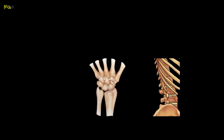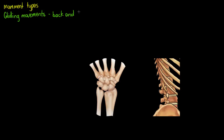Welcome to this tutorial where we are talking about the last type of movement that we haven't really focused on too much as yet, and that's gliding movements. Gliding movements are a type of movement that includes joints that are sliding back and forth across each other or even side to side. A good example we can think of straight away for this type of movement would be the carpals in our hand or the tarsals in our foot.